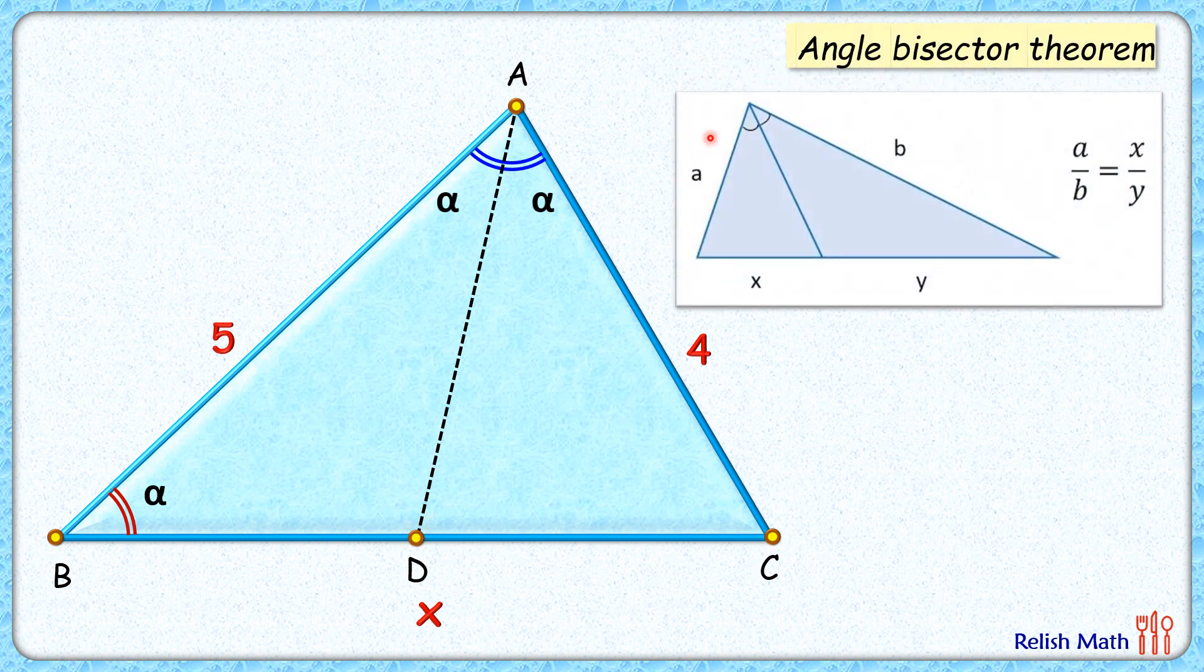The angle bisector theorem states that the angular bisector of an angle divides the opposite side in the same ratio as the sides containing the angle. So this opposite side will get divided in the same ratio as a is to b.